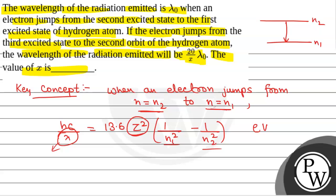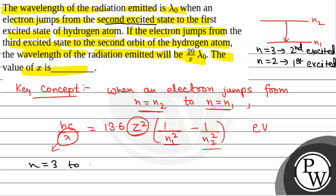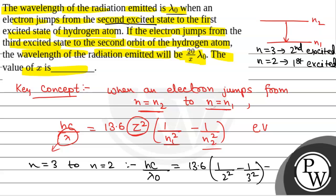For the first transition — second excited state (n = 3) to first excited state (n = 2) — we write: hc/λ₀ = 13.6 × (1/2² − 1/3²). This is equation 1.